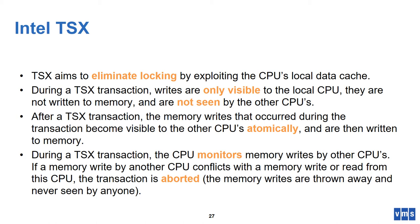What happens after a transaction abort depends on how you use this extension. The CPU cache is very tightly integrated into the CPU core. While performing a transaction, the processor keeps track of which cache lines in its local cache are part of the transaction and need to be flushed to main memory after completion. Intel has implemented two mechanisms to make use of this underlying principle of using the cache.